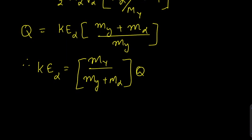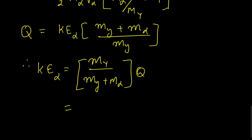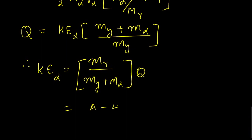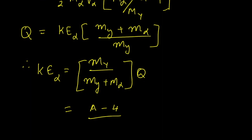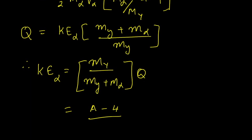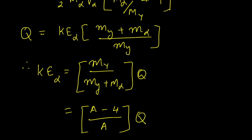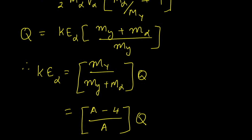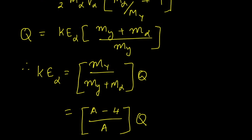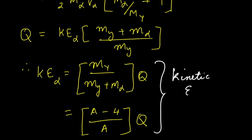The masses can be replaced by the mass number, and this expression is suitable for finding the kinetic energy of alpha particles emitted during alpha decay.